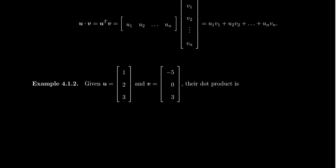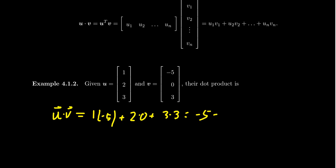The dot product, by definition, is U transpose V. If we think of vectors as one-column matrices, then the dot product is a row vector times a column vector. You take U1 times V1 plus U2 times V2 plus U3 times V3, all the way down to UN times VN. For example, taking U dot V, we get 1 times negative 5, plus 2 times 0, plus the product of the third coordinates, giving negative 5 plus 0 plus 9, so the dot product equals 4.